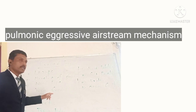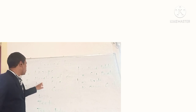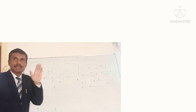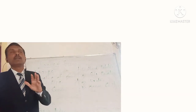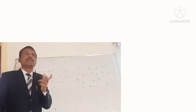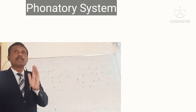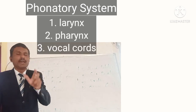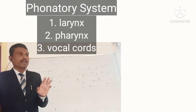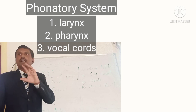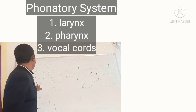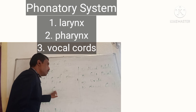The organs of speech involved in the pulmonic egressive air stream mechanism are the muscles of chest, windpipe, and the lungs. The second system under which we study organs of speech and speech sounds is called the phonatory system. Phonatory system includes the pharyngeal cavity, larynx, and the vocal cords.